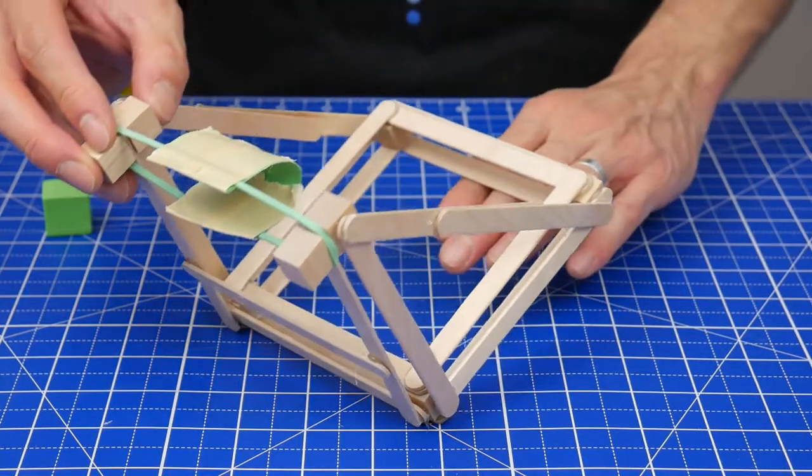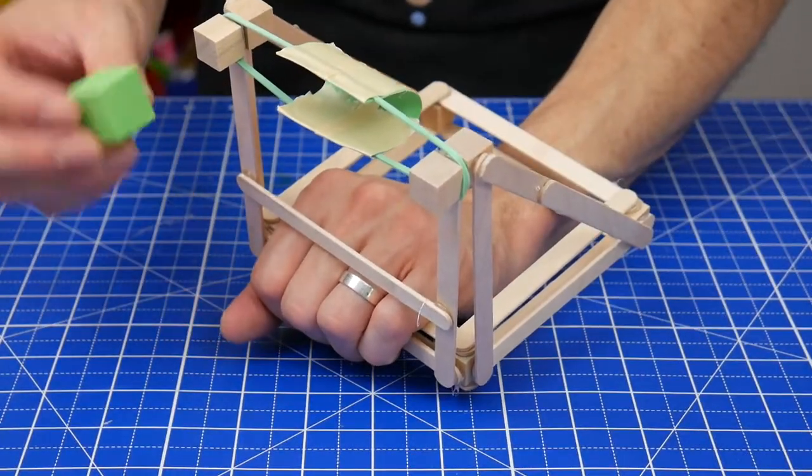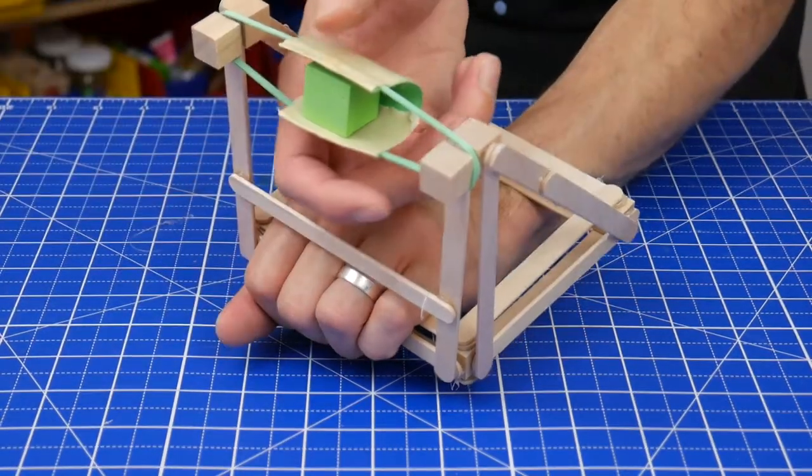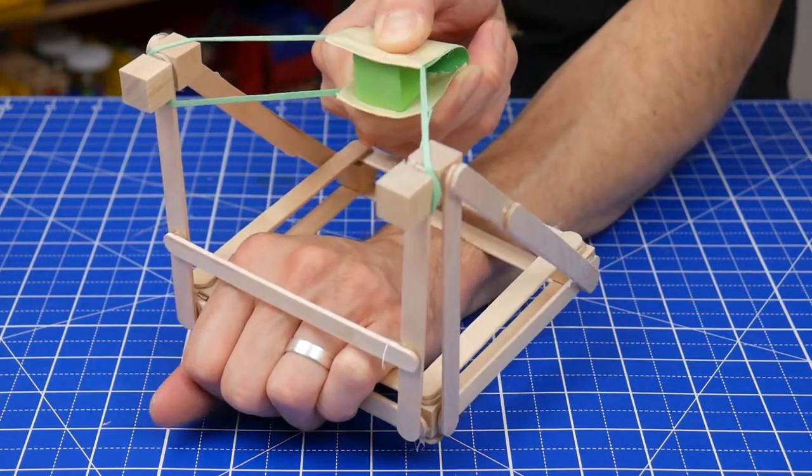Put one hand under the back of the base and then grasp the front of the base. Then use your other hand to load your projectile. I like using these foam cubes. Then pinch the top and bottom of the sling, pull back as much as you want, and let go!